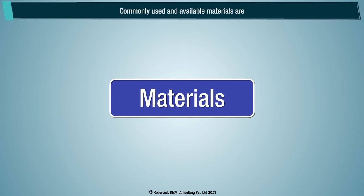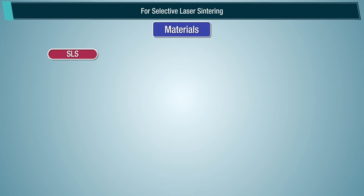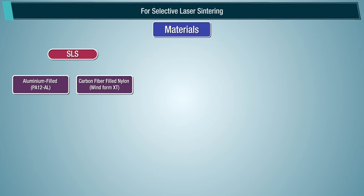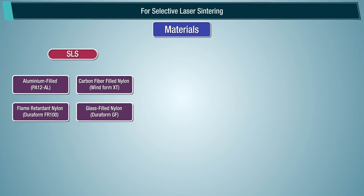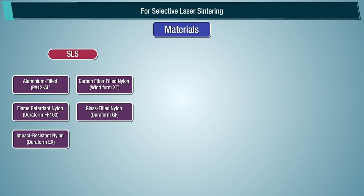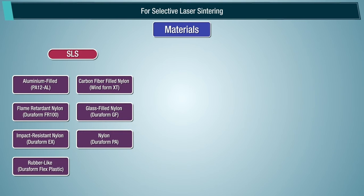Commonly used materials for Selective Laser Sintering (SLS) include: aluminum-filled PA12AL, carbon fiber-filled nylon (WindForm XT), flame-retardant nylon (Duraform FR-100), glass-filled nylon (Duraform GF), impact-resistant nylon (Duraform EX), nylon (Duraform PA), rubber-like DuraFlex, and Polyether Ketone Ketone (PEKK).